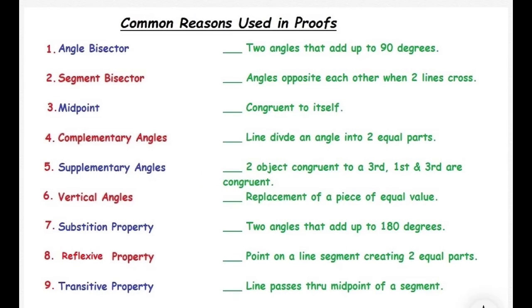Two angles that add up to 90 degrees, that would be complementary angles. Angles opposite each other when two lines cross, that would be vertical angles. Congruent to itself, the reflective property.